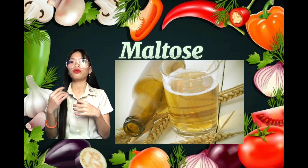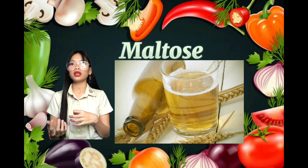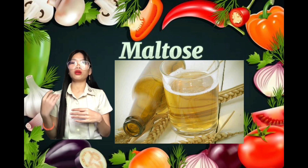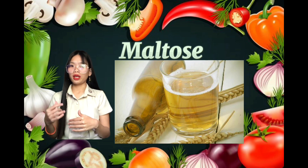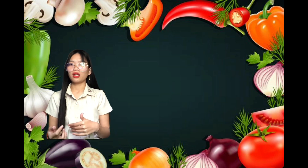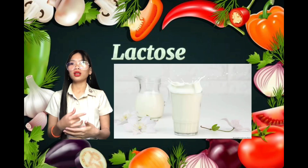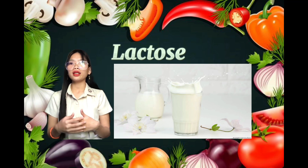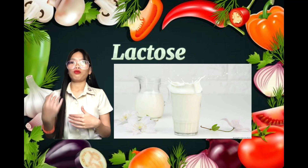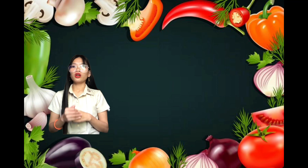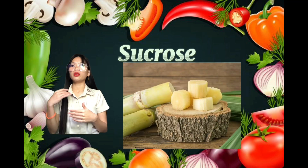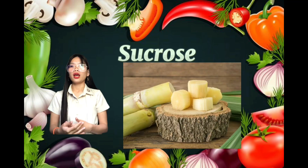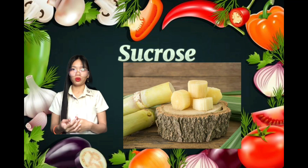Maltose is a combination of two glucose units and it is found in germinating grains and used to make beers. Lactose is a combination of glucose and galactose, and it is found in milk. Sucrose is a combination of glucose and fructose, and it is found in sugar.